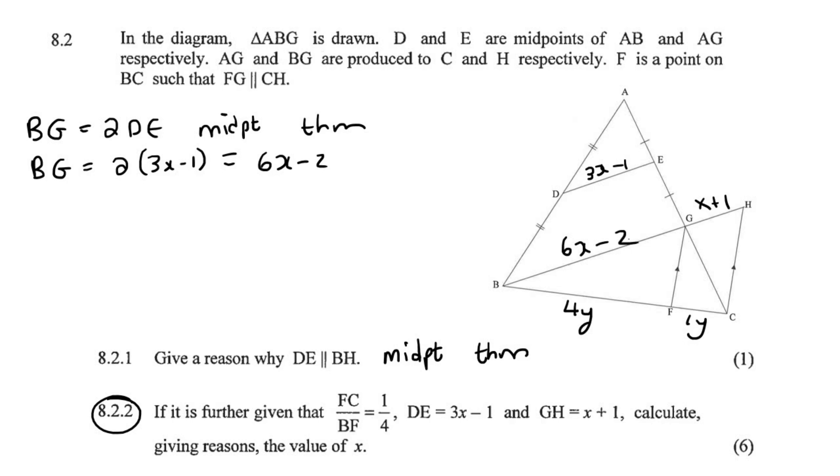Then what we're going to do is just do a bit of proportionality theorem, where we could say, for example, BG over GH is the same as BF over FC, and that's just going to be prop theorem. The reason is GF is parallel to HC.